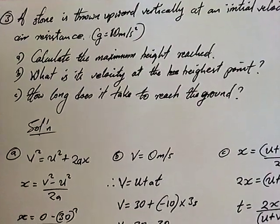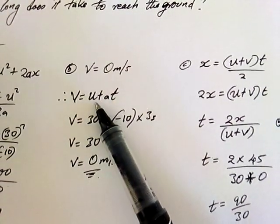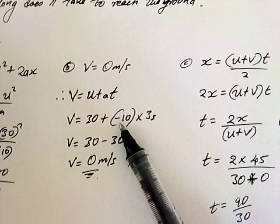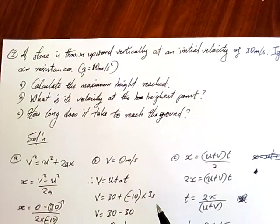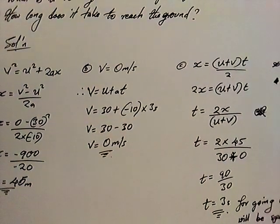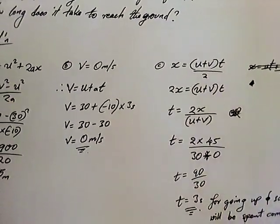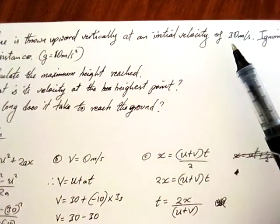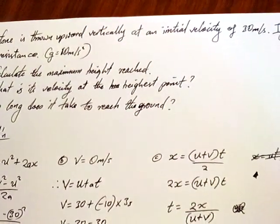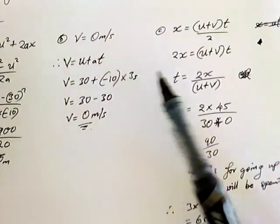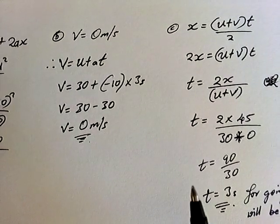Sub-question B: what is the velocity at the highest point? Velocity is zero — at maximum height the stone stops momentarily before falling back down. You can verify using V = U + AT: initial velocity was 30, acceleration is −10 m/s², so after 3 seconds the velocity reduces to zero. The rate of change is 10 m/s per second, so it takes 3 seconds to reach maximum height.